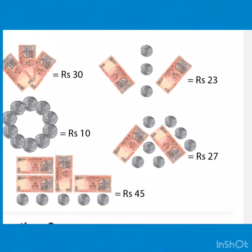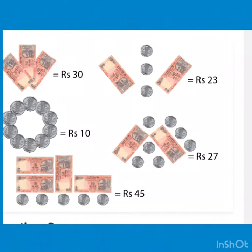2 10 rupee notes and 7 1 rupee coins is equal to rupees 27. 4 10 rupee notes and 5 1 rupee coins is equal to rupees 45.